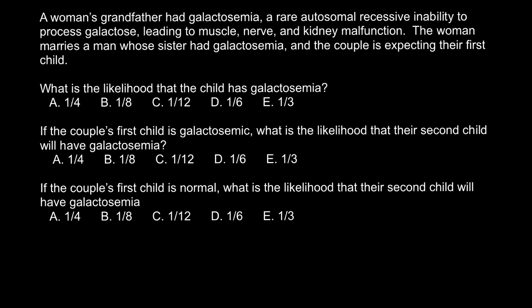Hello and welcome to Nikolai's genetics lessons. Today's problem: a woman's grandfather had galactosemia, a rare autosomal recessive inability to process galactose leading to muscle, nerve, and kidney malfunction. The woman marries a man whose sister had galactosemia, and the couple is expecting their first child. Here are the three questions. Question number one: what is the likelihood that the child has the same genetic disorder?